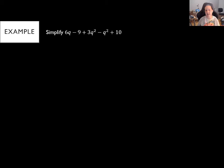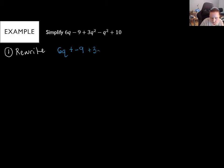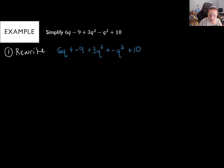Let's move on to a second example, done more conventionally. Step one, rewrite: 6q − 9 + 3q² − q² + 10. I turn the minus signs into adding negatives: 6q + (−9) + 3q² + (−1q²) + 10. I also need to put a 1 in front of the q² without a number. So I slide that 1 in.